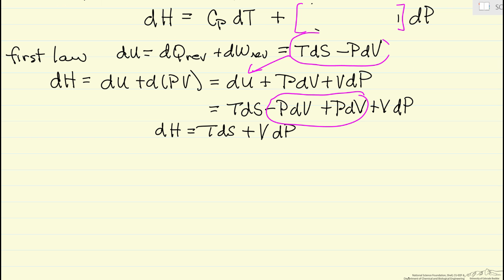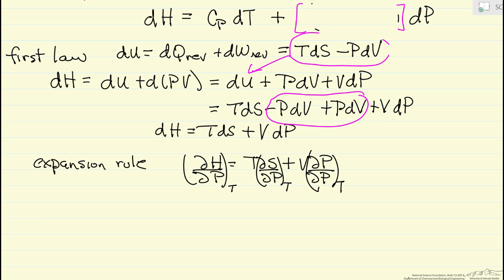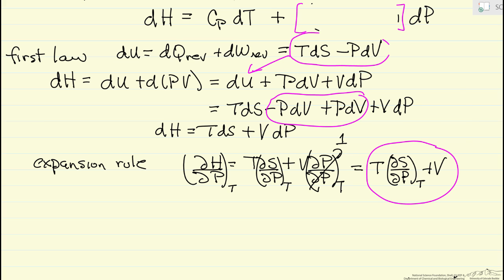Next I apply the expansion rule to this equation. I'll rewrite it in terms of partials to make room. What it looks like I'm doing is dividing by the partial with respect to P at constant temperature — that's not actually what I'm doing, but the calculus calculation looks like that, so it's a way to remember it. The derivative of P with respect to P is 1, so I can simplify and substitute back to get an expression for dH with respect to pressure.